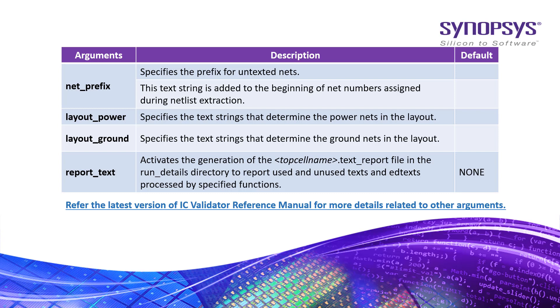The report_text argument activates the generation of the <topcellname>.text_report file in the run_details directory to report used and unused text and edtext processed by specified functions. By default, the IC Validator tool does not report any text.